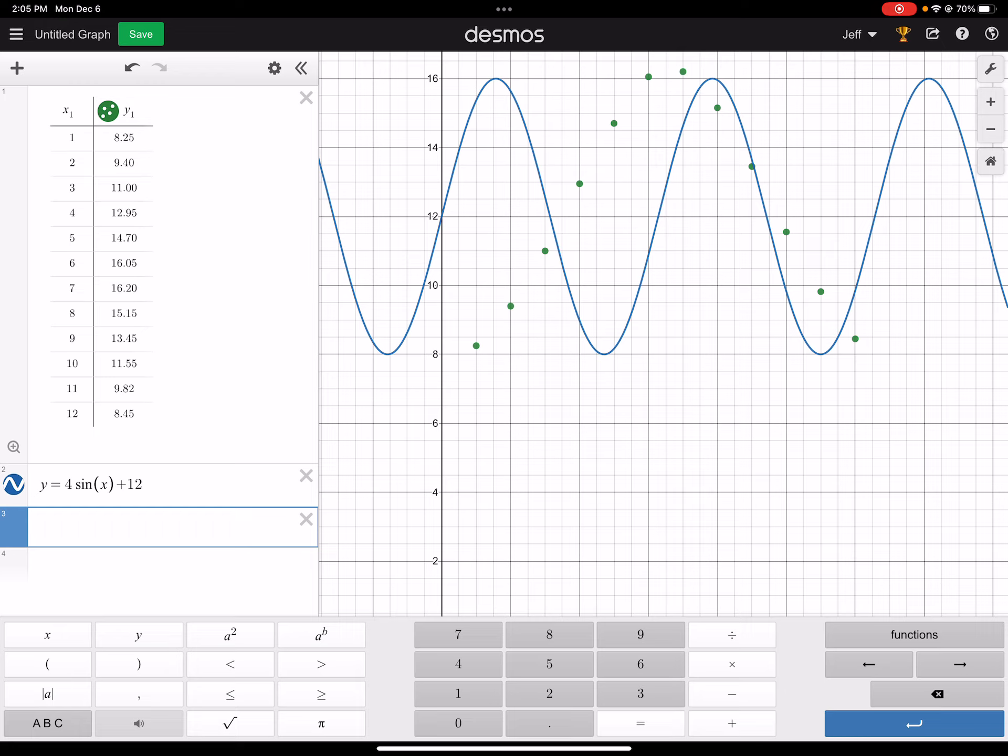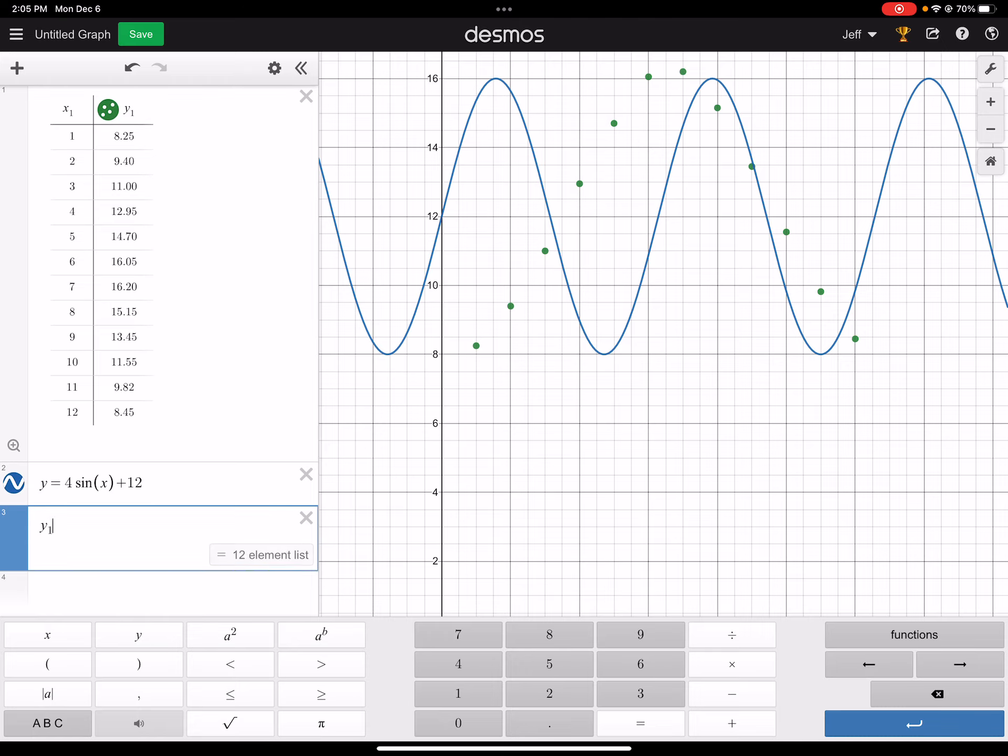So what you do there is you're using the tables from up here, so the x1 and the y1. So I'm going to say y1. And instead of using equals, I have to use a tilde.